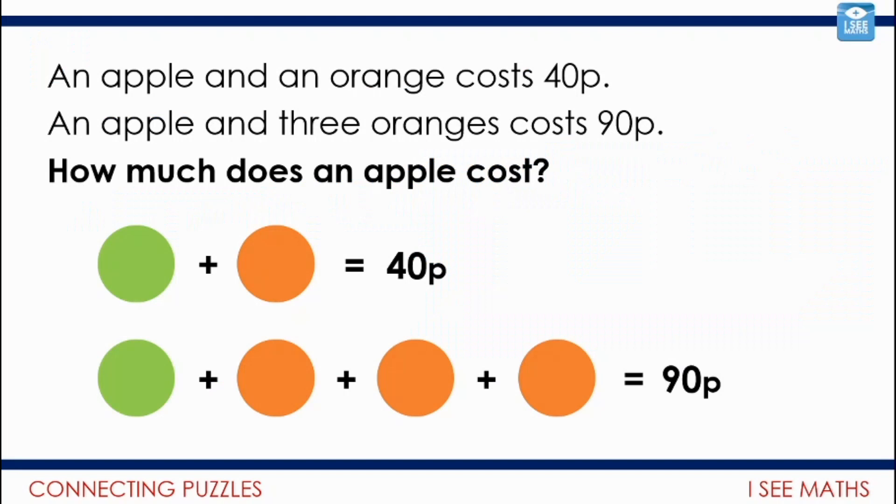So this is an example that we've looked at. An apple and an orange cost 40p, and that's a picture that could represent this. An apple and three oranges cost 90p. How much does an apple cost? We looked at, well first of all, I need to think, well, this difference here is 50p. So each orange must be 25p. And so then I can just work out the value of the apple to make that top line 40p, 15p.